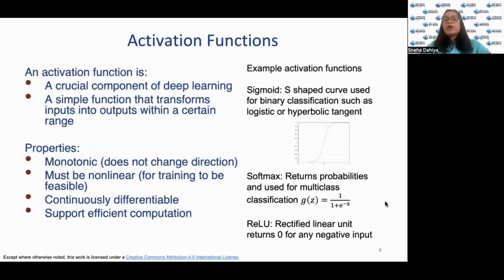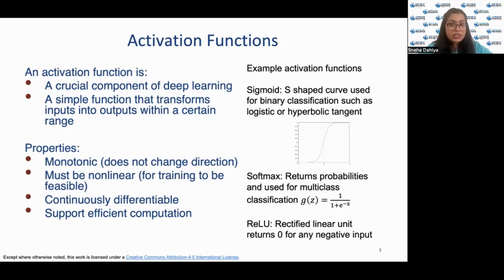Now we'll talk more about activation functions. Activation functions are a crucial component of deep learning — they are simple functions that transform inputs into outputs within a certain range. They should have several properties: they are monotonic in nature, meaning they are either always increasing or always decreasing; they must be non-linear for training to be feasible; and they are continuously differentiable and support efficient computation. Examples of activation functions include ReLU, softmax, sigmoid, and many more.